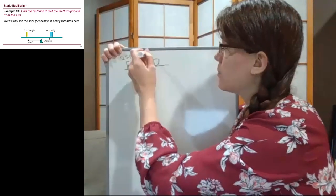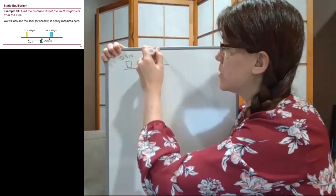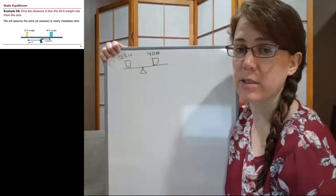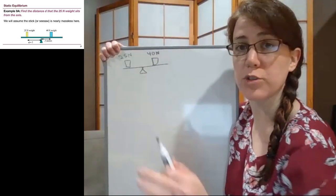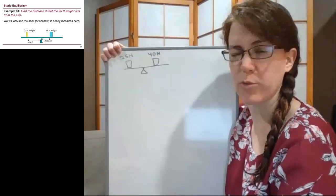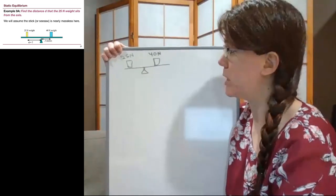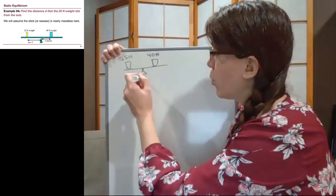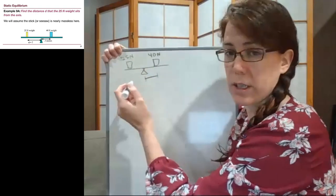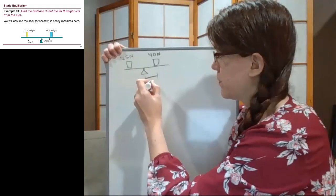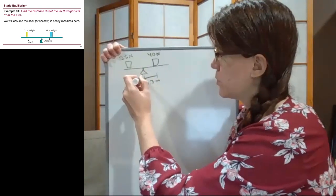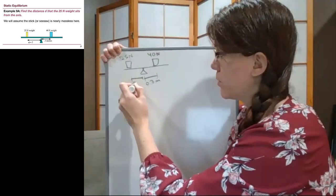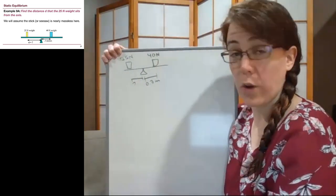We also have this other object that is 40 newtons. Again, that's weight already, it's not mass. All I'm doing so far is drawing the picture on our slide. We're told that this distance here is 0.3 meters, and that this one here is our unknown.